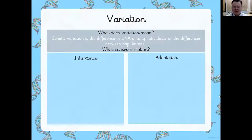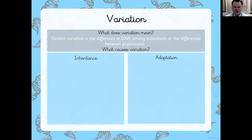What does variation mean? Genetic variation is the difference in DNA among individuals, or the differences between populations. So what causes variation?